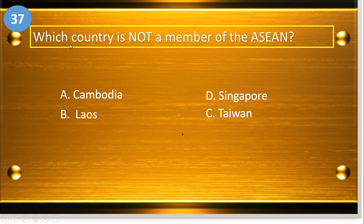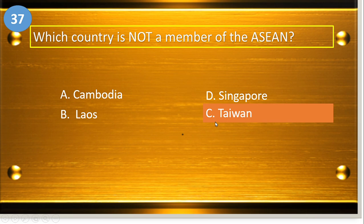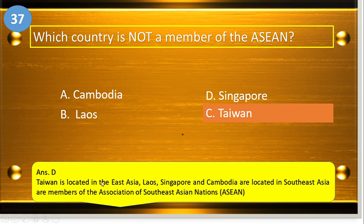Number thirty-seven: which country is not a member of the ASEAN? A, Cambodia; B, Laos; C, Taiwan; and D, Singapore. The answer is Taiwan. Taiwan is located in East Asia. Laos, Singapore, and Cambodia are located in Southeast Asia and are members of the Association of Southeast Asian Nations, or ASEAN.